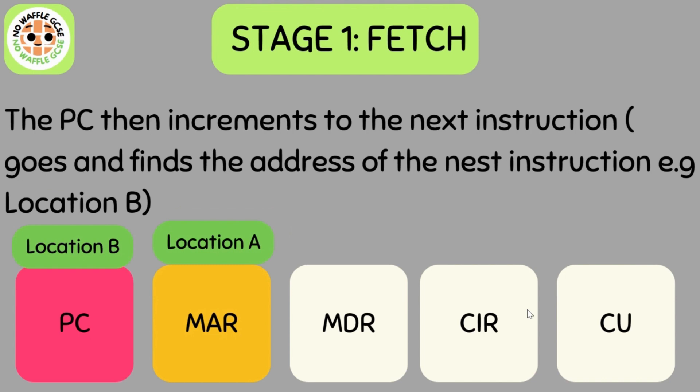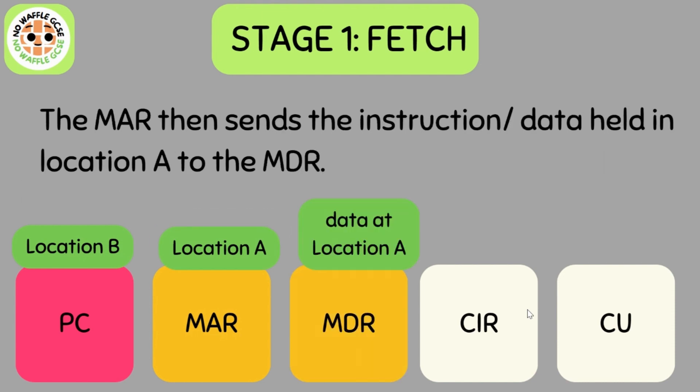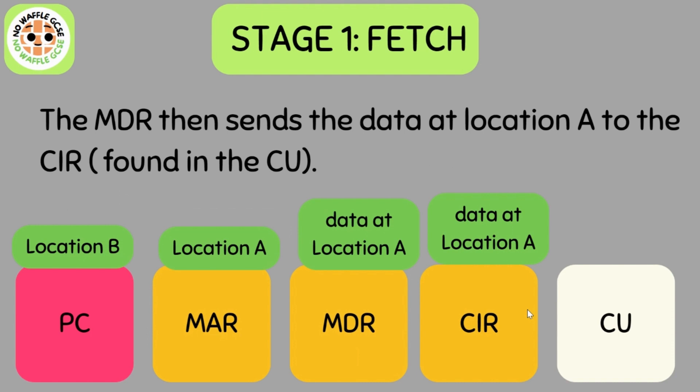The PC then increments to the next instruction — it finds the address of the next instruction, for example location B, so that the computer is ready to move on. The MAR then sends the location of the data to the MDR, and the MDR goes and finds the data held at that memory location. The MDR then sends the data to the CIR, the Current Instruction Register, which is found in the Control Unit.